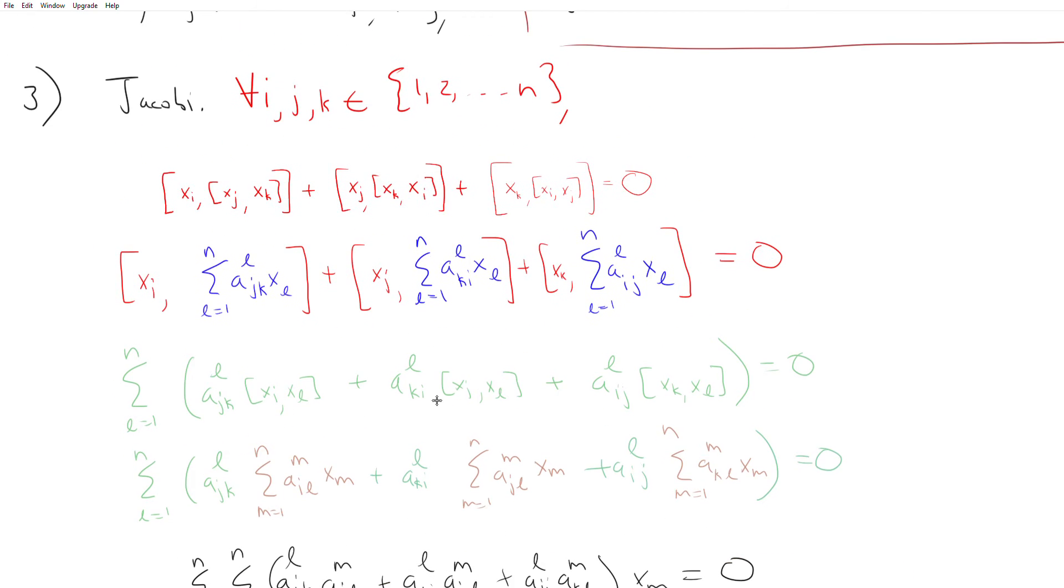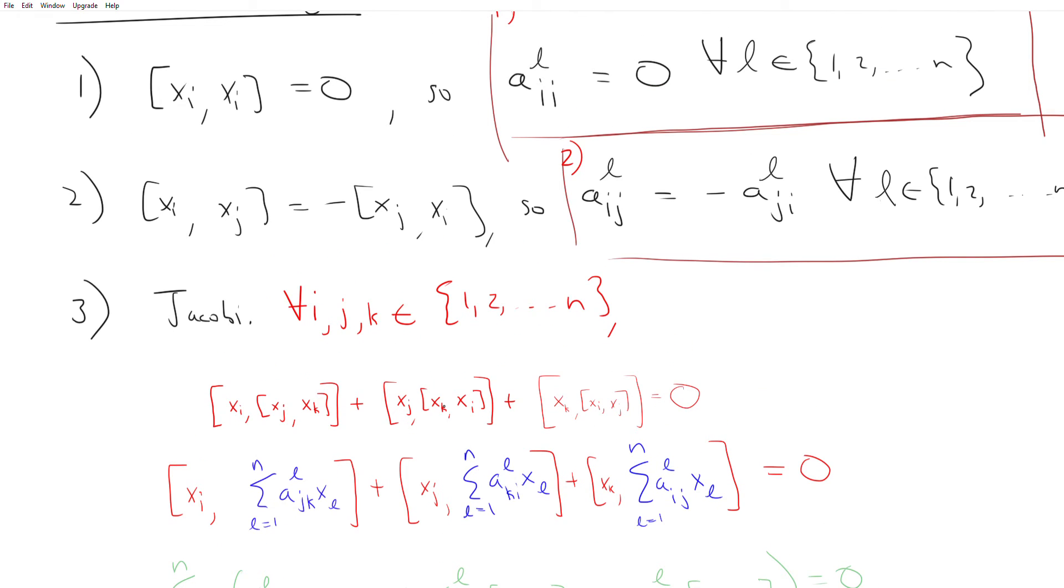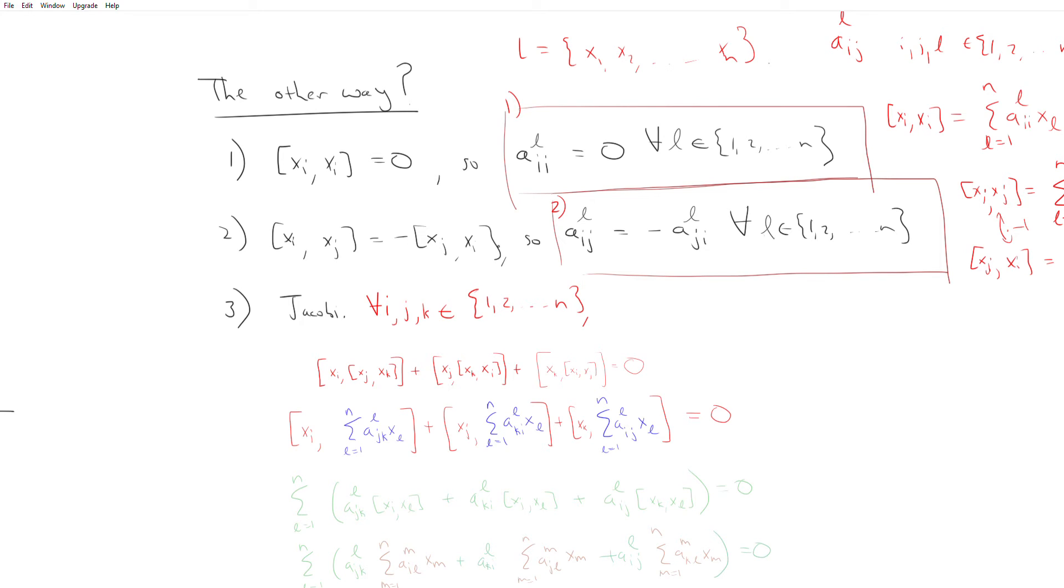And so I hope even though I'm not explicitly showing it here, I hope it's clear why these are the three things we need to check because those are really the things that we impose on the brackets. And so that pretty much covers our small digression on abstract Lie algebras. And so we'll move on into the next section in the next video. So thanks for watching.